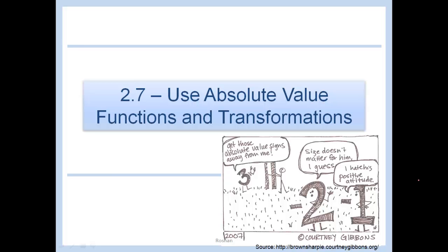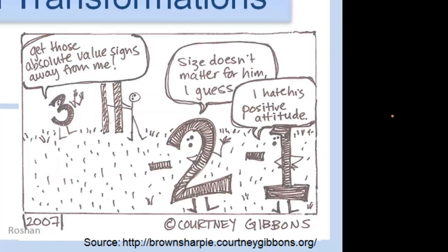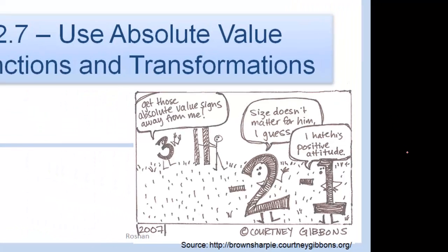2.7: use absolute value functions in transformations. Get those absolute value signs away from me. Size doesn't matter for him, I guess. I hate his positive attitude. Well, the absolute value of 3 is 3, so the absolute value signs don't matter for him. For negative 2 and negative 1, of course it does.